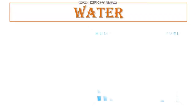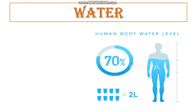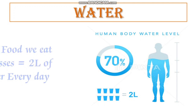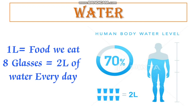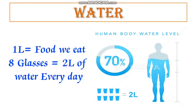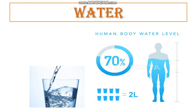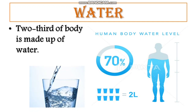We all know the importance of water. Our body is almost 70% made up of water, and our body requires 3 liters of water every day. One liter comes from the food and drinks we have every day, and the remaining 2 liters we must complete by taking at least 8 glasses of water daily. Almost two-thirds of our body is made up of water.